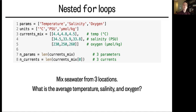And we've created variables to save the length of each of these dimensions. n_params is the number of different properties, which is three, and n_currents is the number of currents that we'll be averaging over, which is also three.